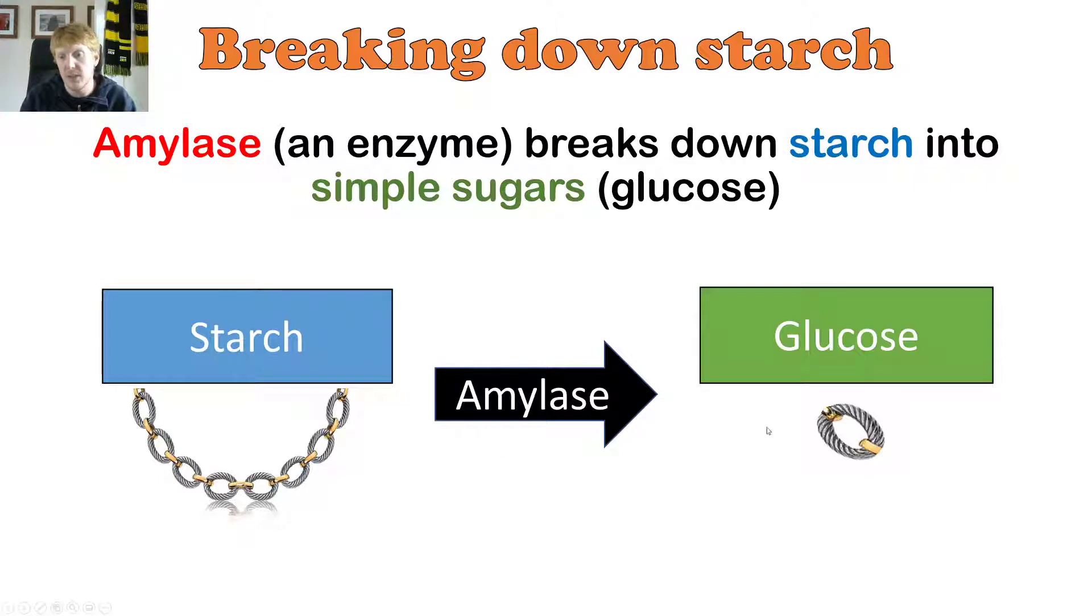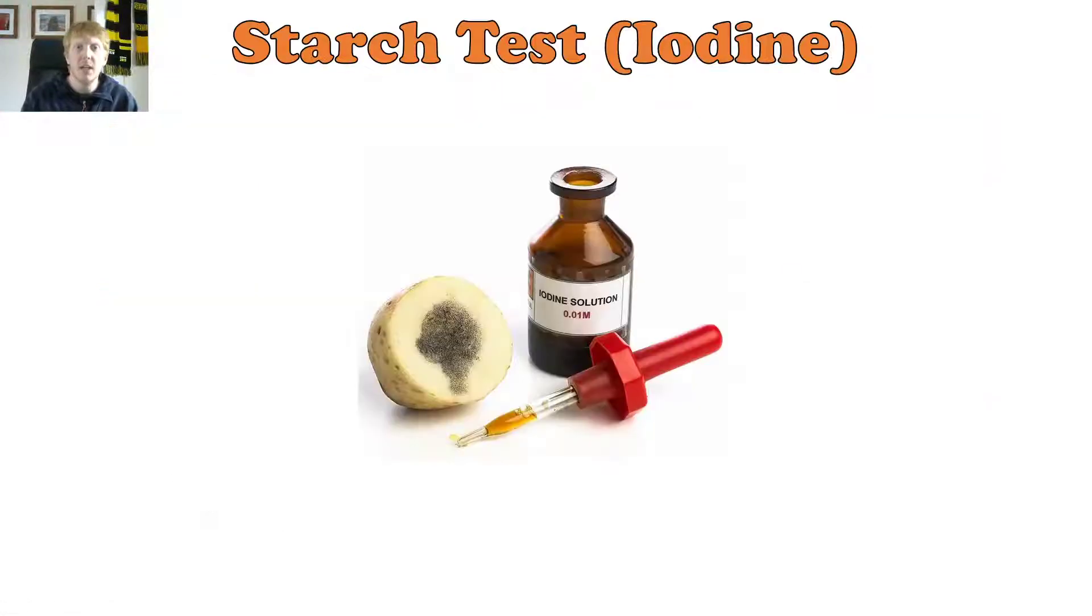So from lots of glucose joined together into a single link there. That is exactly what amylase does. It breaks down starch.